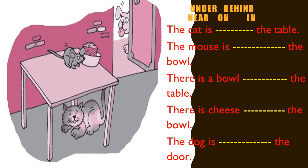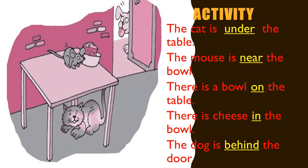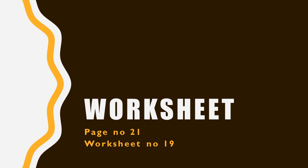Think — yes, there is a bowl on the table. Next: there is cheese ___ the bowl. Where is the cheese? Can you find it in the picture? Yes, there is cheese in the bowl. Last: the dog is ___ the door. Where is the dog? Yes, the dog is behind the door. Very good! Now look at these answers and check them with yours.